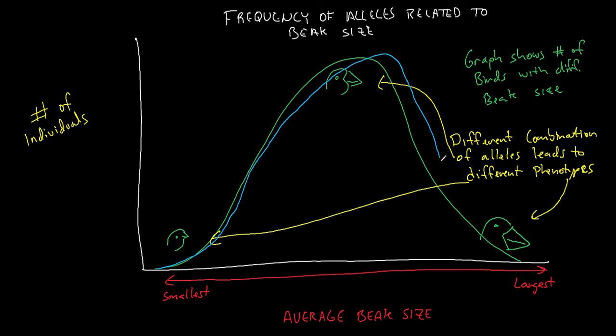And so in a generation or two, if you're measuring again, you're going to see a shift in the frequency of alleles. We'll show that here. Everything shifts a little bit to the right. So now the average beak size is a little bit bigger, and there's more birds that are surviving with the bigger beaks.